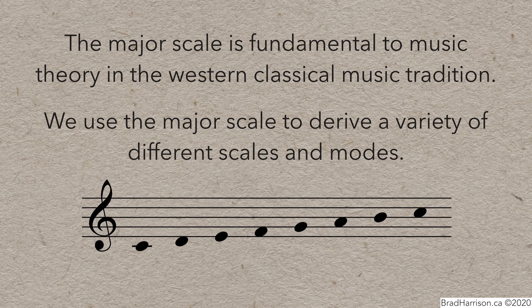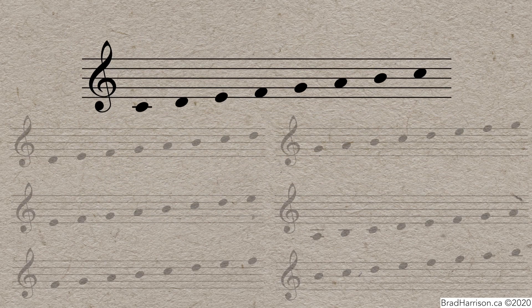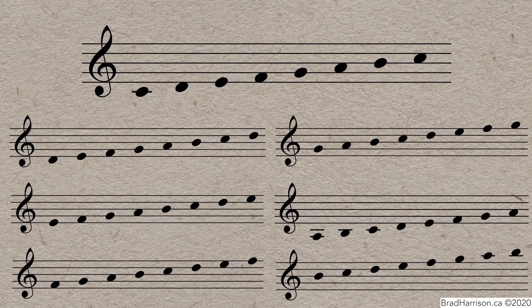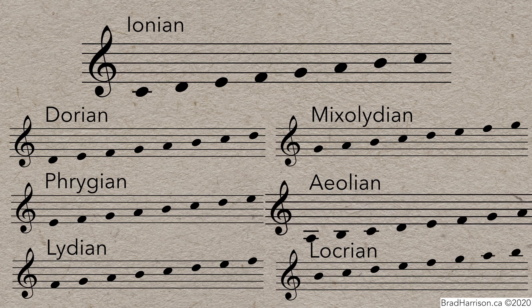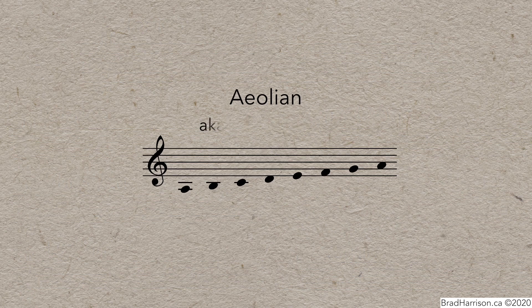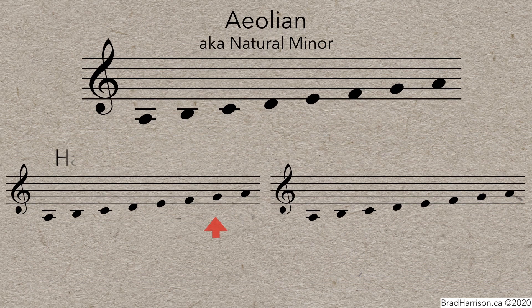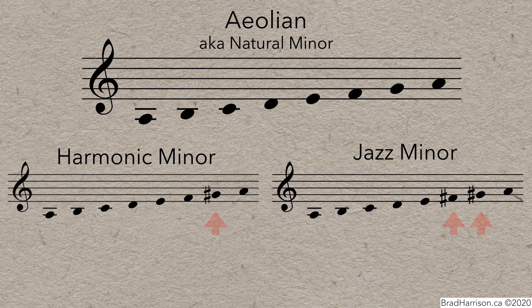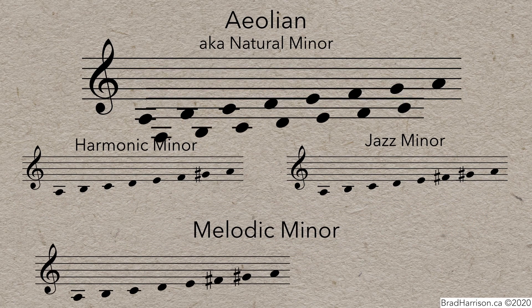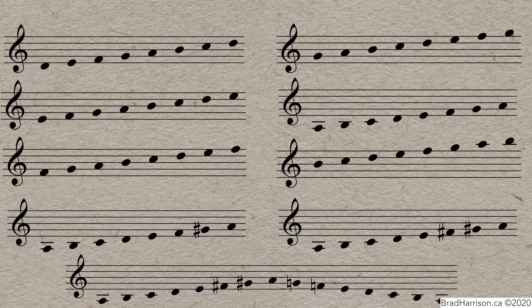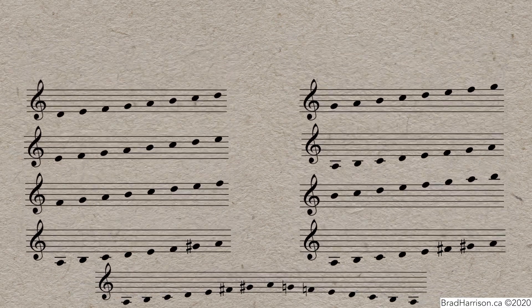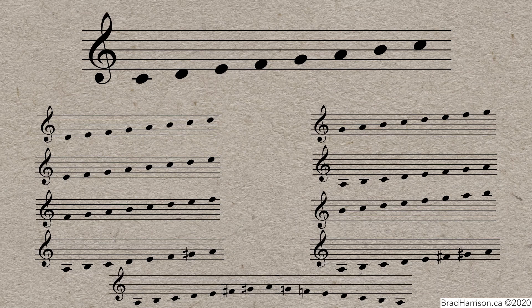This is the C major scale, and using only these notes we can create all these other scales, known as modes, by simply starting the scale in a different place. They all have fancy names, but each one is said to be related or relative to the original major scale. This mode in particular, the Aeolian mode, also known as the natural minor scale, can be altered to give us the harmonic minor scale, the jazz minor scale, and the melodic minor scale. Although it's pretty clear that all these scales are related to C major, it's a pretty complicated Rube Goldberg device to get to some of them.